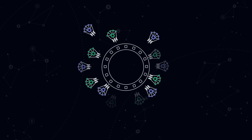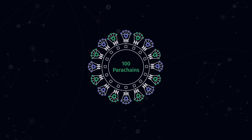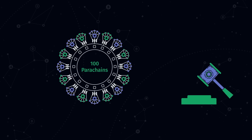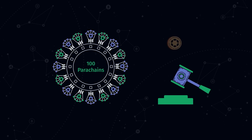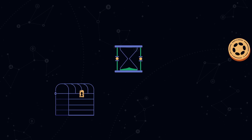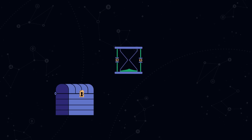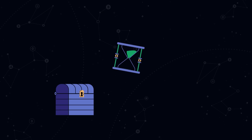In total, Polkadot offers more than 100 parachains, which can be added by participating in a dedicated parachain slot auction that gives them the right to lease a parachain slot for up to two years. To lease a parachain, one is also required to lock a certain amount of DOT for the whole period of the parachain lease.